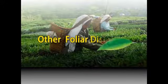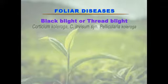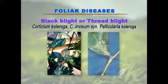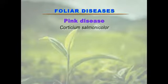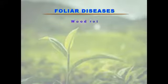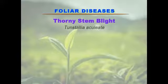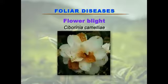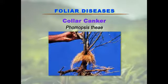Now let's see other diseases which attack on leaf. Black blight or thread blight is caused by Corticium koleroga and Corticium invisum, synonymous with Pellicularia koleroga. Pink disease is caused by Corticium salmonicolor. Wood rot is caused by Hypoxylon serpens. Twig dieback or stem canker is caused by Macrophoma theicola. Thorny stem blight is caused by Tanstella aculeata. Flower blight is caused by Ciborinia camelliae. Collar canker is caused by Phomopsis theae.